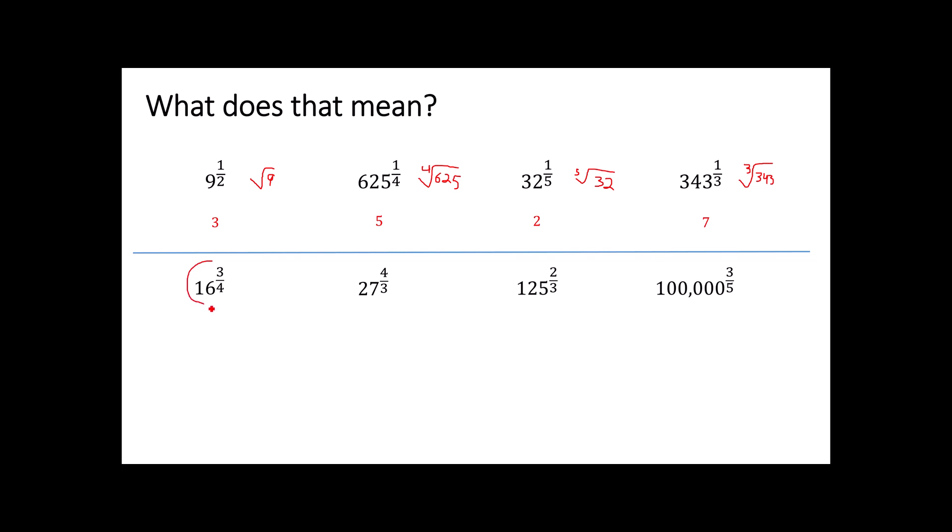If I decide to get really fancy on you do something like 16 to the three fourths don't forget that you can take that three fourths and you can split it into one fourth and three and use your power of a power property. The fourth root of 16 is just a 2 and 2 to the third is 8. Same thing over here. Take that four third and split it into a third and a four, power of a power property. What times itself times itself again is 27? It's a 3. 125 to the two thirds you split that into a one third and a two, the cube root of 125 is a 5 and 5 squared is 25.